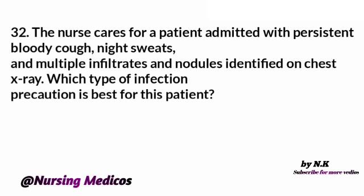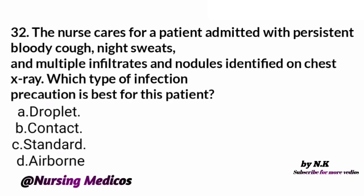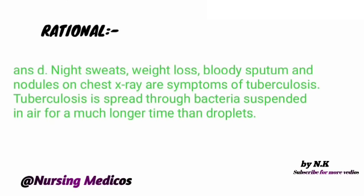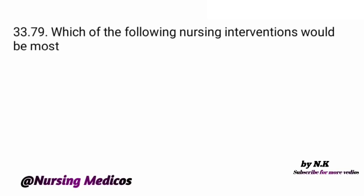Question 32: The nurse cares for a patient admitted with persistent bloody cough, night sweating, and multiple infiltrates and nodules identified on chest X-ray. Which infection precaution is best? Options: A) Droplet, B) Contact, C) Standard, D) Airborne. Answer is D, airborne. The rationale is night sweating, weight loss, bloody sputum, and nodules on chest X-ray are symptoms of tuberculosis. Tuberculosis is spread through bacteria suspended in air for a much longer time than droplets.